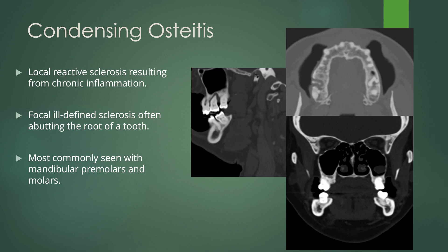Last but not least, we have condensing osteitis. This is local reactive sclerosis resulting from chronic inflammation. It can be ill-defined, abutting the root of a tooth that usually has some sort of periodontal disease associated with it. You see periapical lucency and then sclerosis in the adjacent bone, purely from chronic irritation and inflammation from chronic periodontal disease. This is most commonly seen with mandibular premolars and molars.